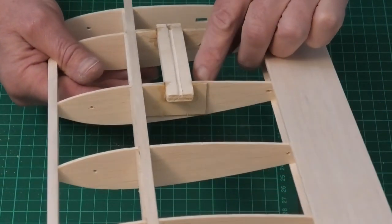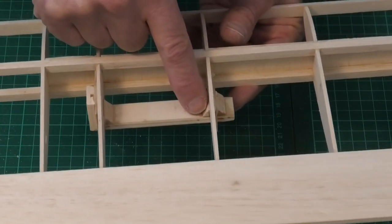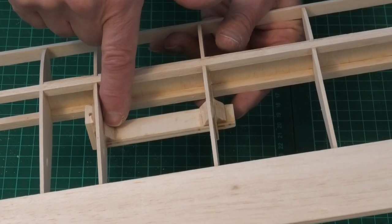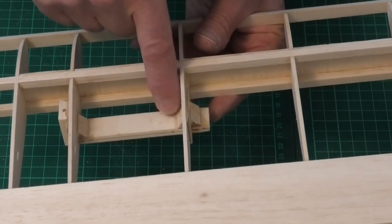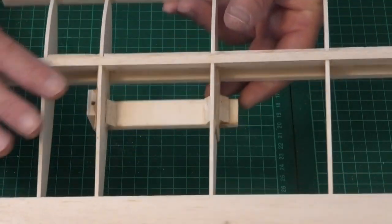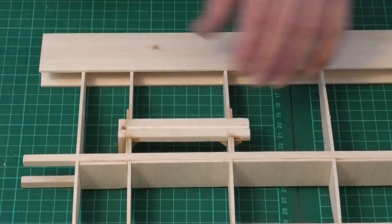You can see there and if we turn it over we can see there's some quarter-inch triangular stock here that's just providing a little bit more strength. It's all very simple and as per the plan, no deviation from the plans.